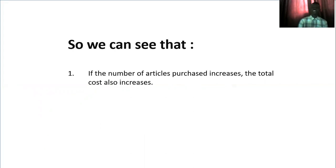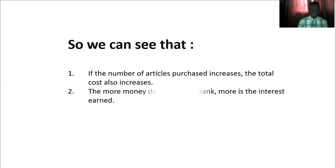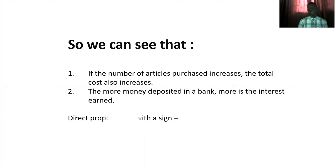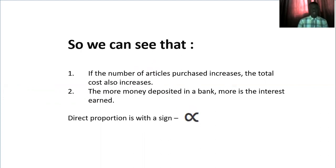So if the number of articles purchased increases, the total cost will also increase. Similarly, when you deposit money in a bank, the more money deposited, the more the interest. Direct proportion uses the proportionality sign — that coil-like sign that looks like a fish. Note that direct proportion is sometimes just called proportion; inverse proportion is the opposite, which is why we add the word 'inverse' to distinguish the two.